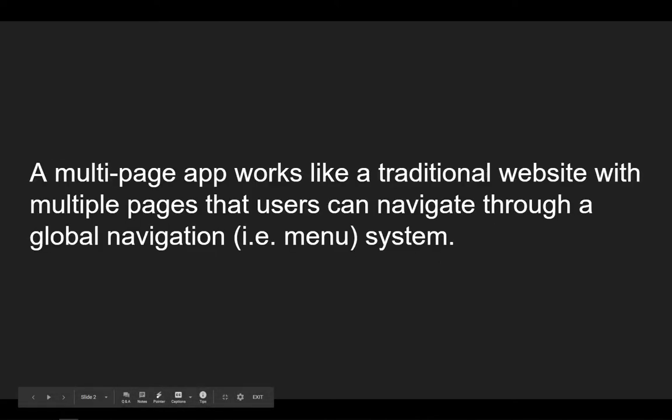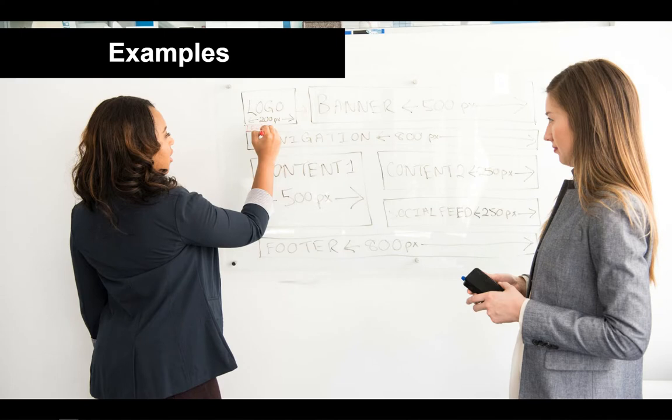So a multi-page application — let's define it first. A multi-page app works like a traditional website where multiple pages are on the app and users can navigate through them with some kind of global navigation system — a traditional menu, something that you might find always at the top of the page or maybe along the side of the page. Now let's look at a couple of examples of some popular multi-page applications that you might have come across online.